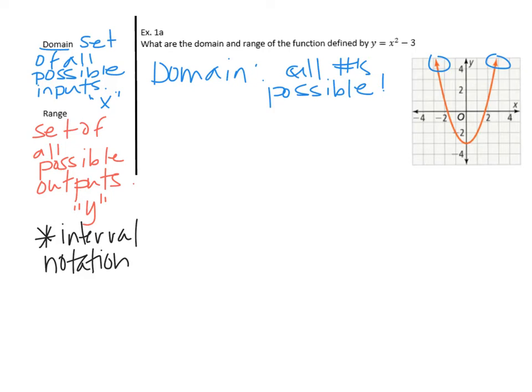That means all numbers are possible for x. Because of that, our interval notation is going to go from negative infinity to positive infinity. The infinity symbol only ever gets parentheses because it isn't an exact location.